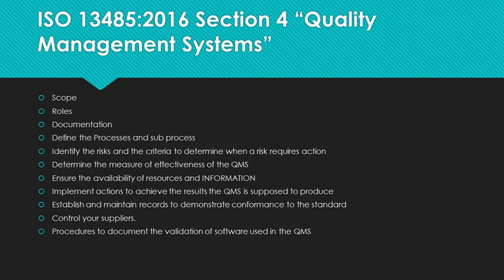Developing the QMS, you need to identify the risks and the criteria to determine when a risk requires action. When do you need to reduce the likelihood? When do you need to reduce the severity or increase the ability to detect a risk? The QMS needs to determine the measure of its own effectiveness — how do you know if it's working? Are there trends in key performance indicators? How do you know if you're getting better, worse, or staying the same? You need to ensure the availability of resources and information. You must implement actions to achieve the results the QMS is supposed to produce; if the QMS is not performing, you must act to fix it.